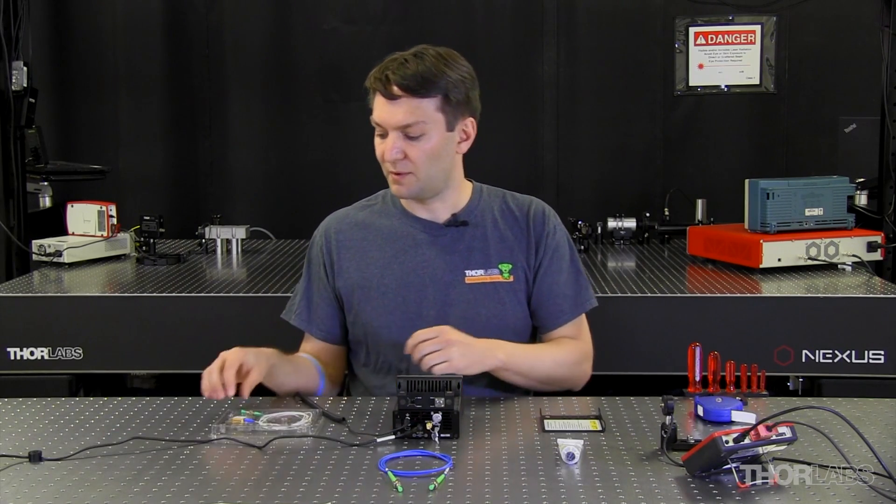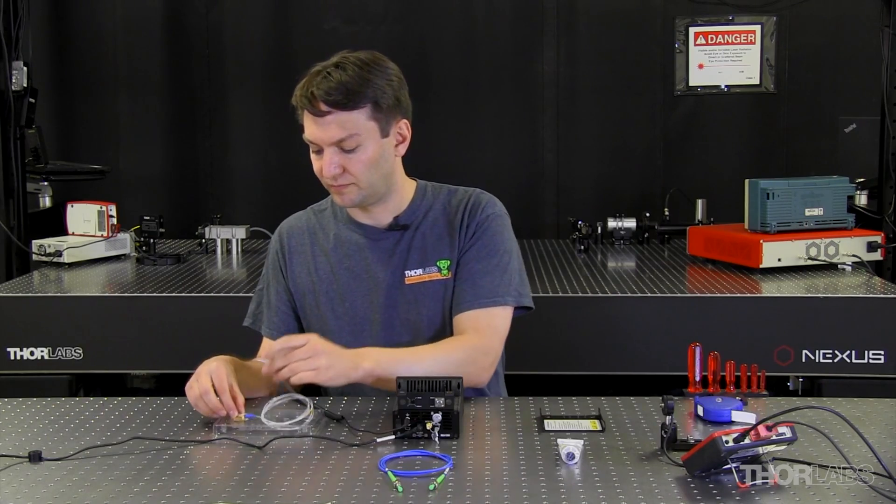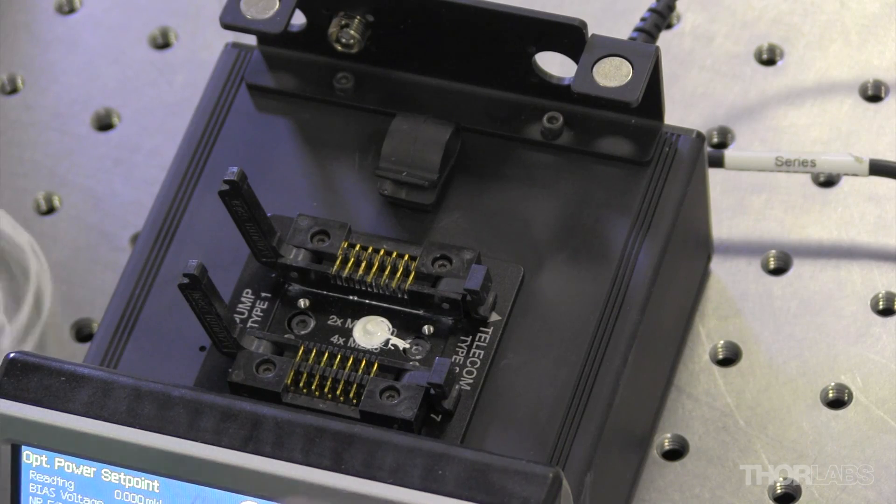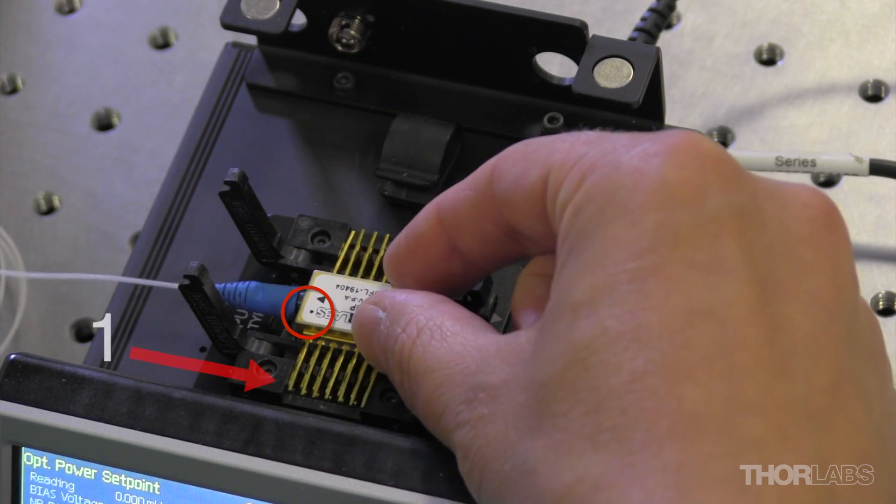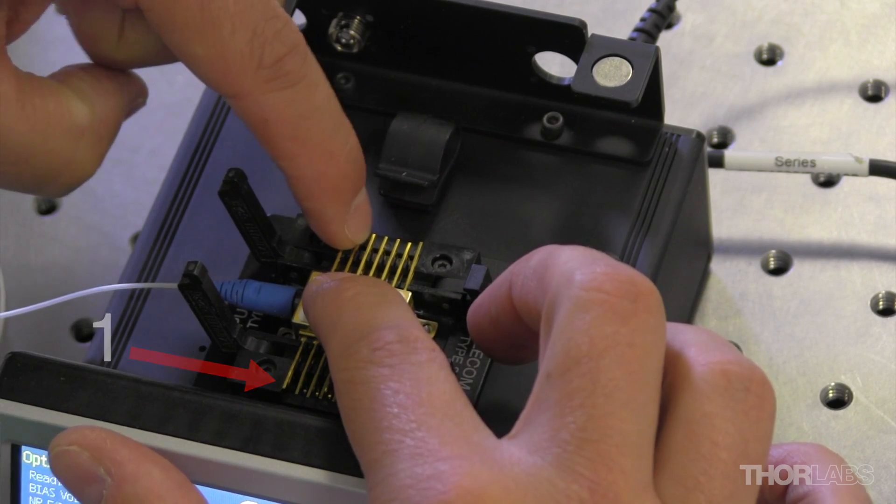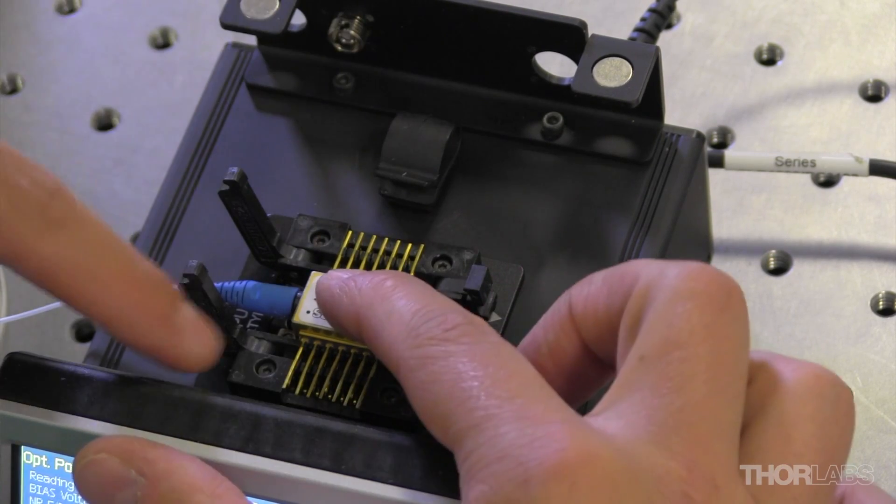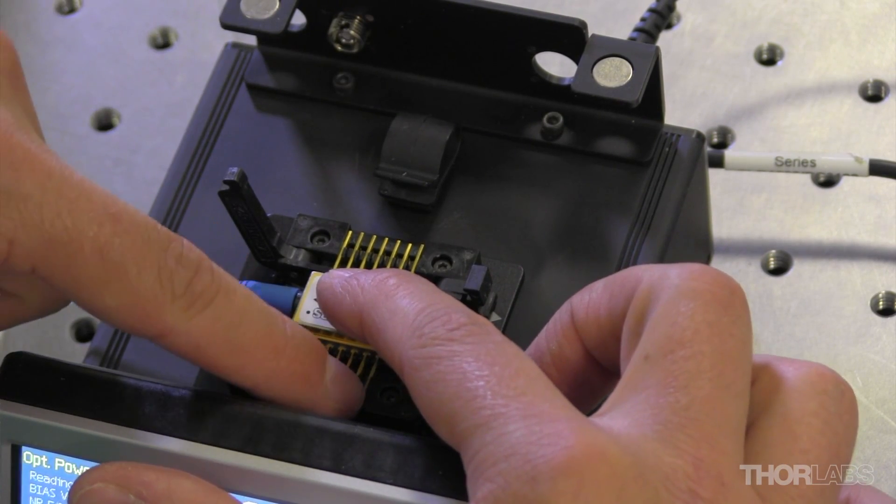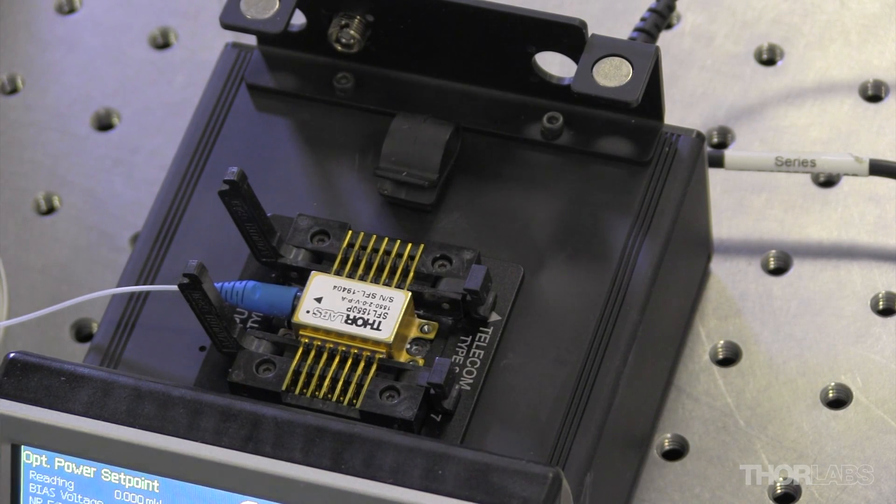In this case, the pin 1 location is denoted by a dot on the top of the laser package. So I'll take my butterfly package, find the dot, and line that up with the pin 1 location inside my mount. Once the laser is in place, I'm going to make sure all the electrical connections from the pins are seated in the seats. We don't want any of the pins to be bent, and we definitely don't want any of the pins to cross over to another connection.